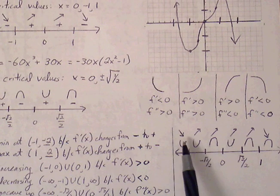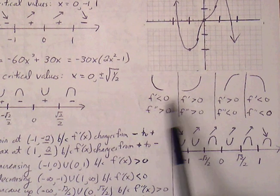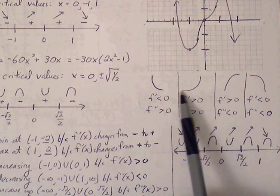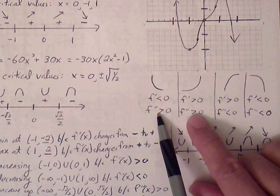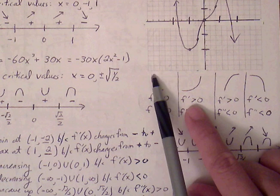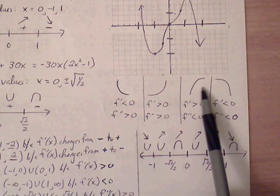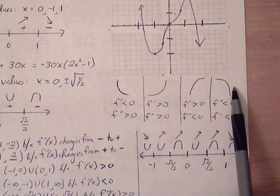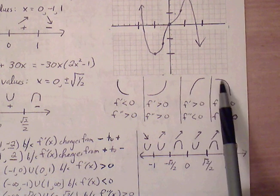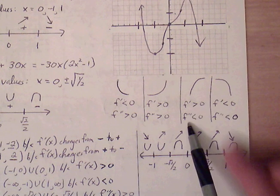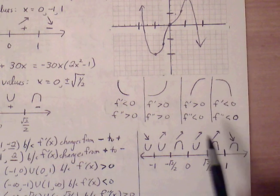How slope and concavity are paired determines the curvature used to sketch each section. There are four curvature types: concave up with decreasing slope, concave up with increasing slope, concave down with positive (increasing) slope, and concave down with negative (decreasing) slope. Think of concave up portions as resembling a parabola opening upward, and concave down portions as resembling a parabola opening downward.